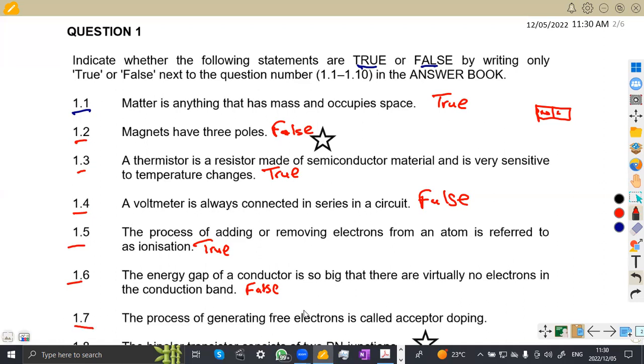1.7, the process of generating free electrons is called acceptor doping of generating electrons. All right.